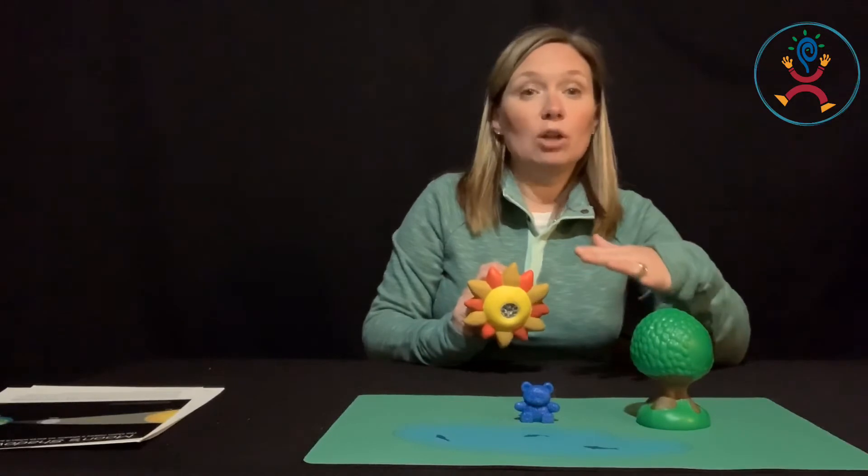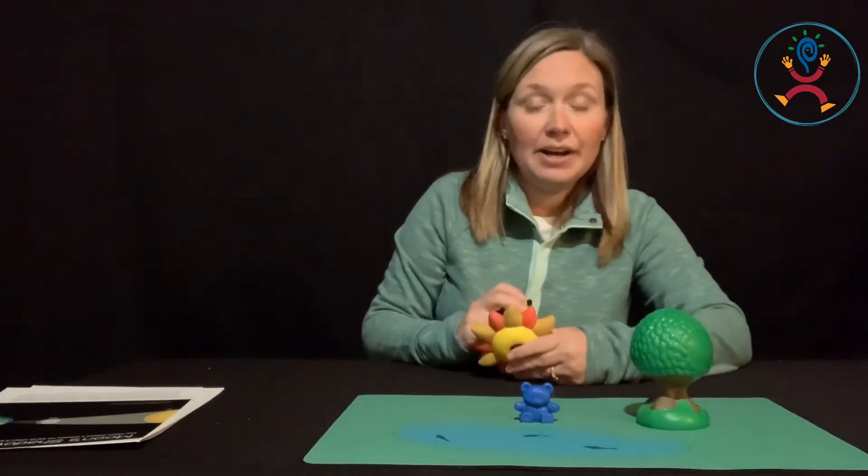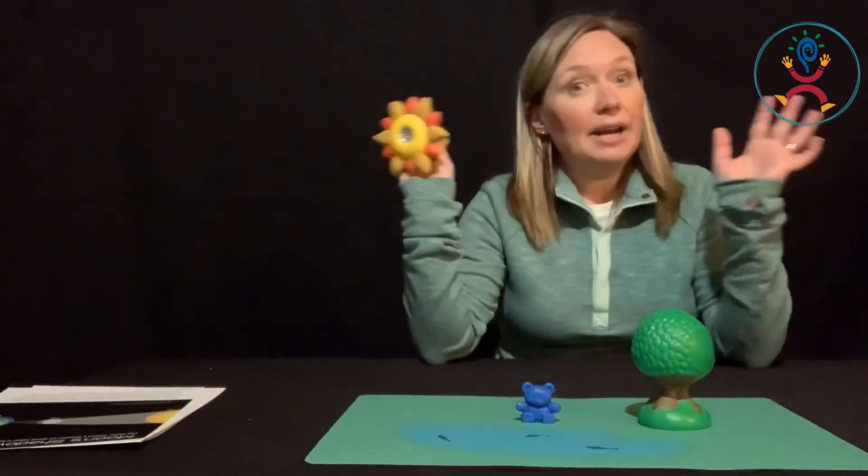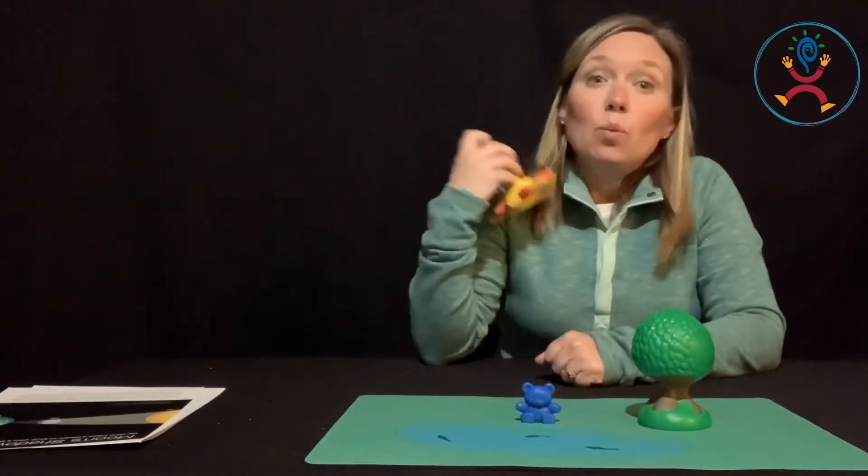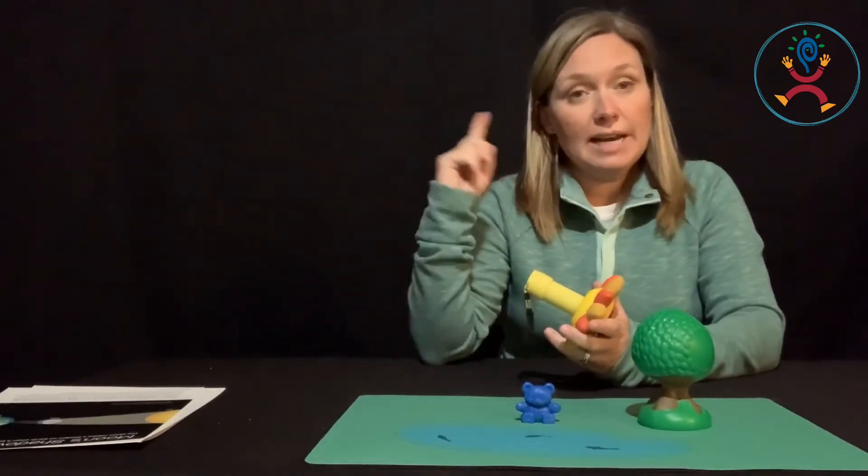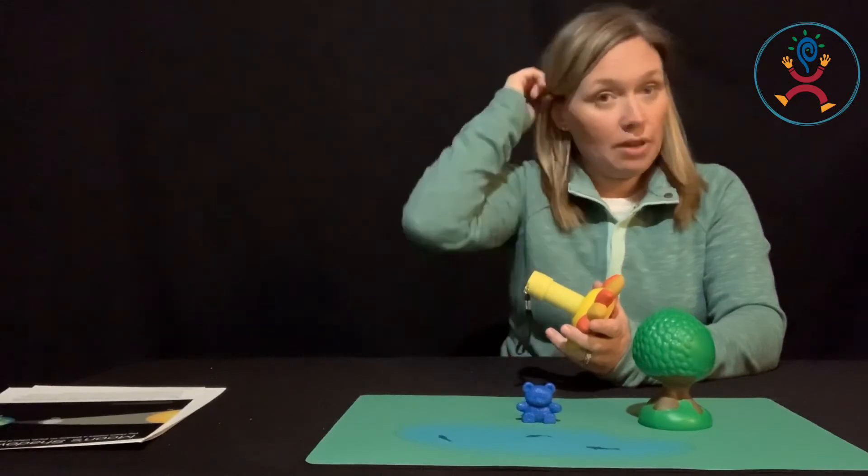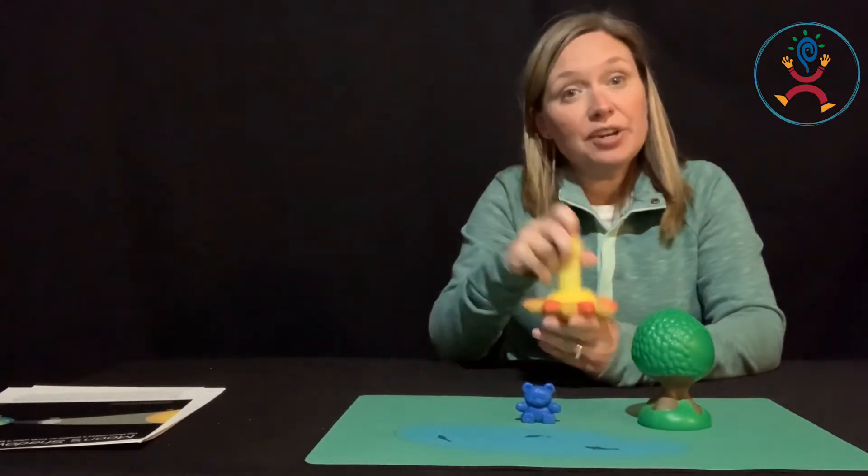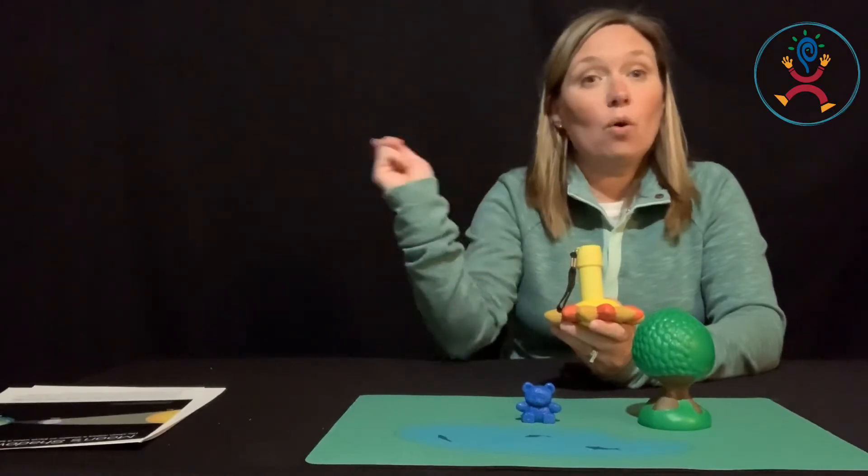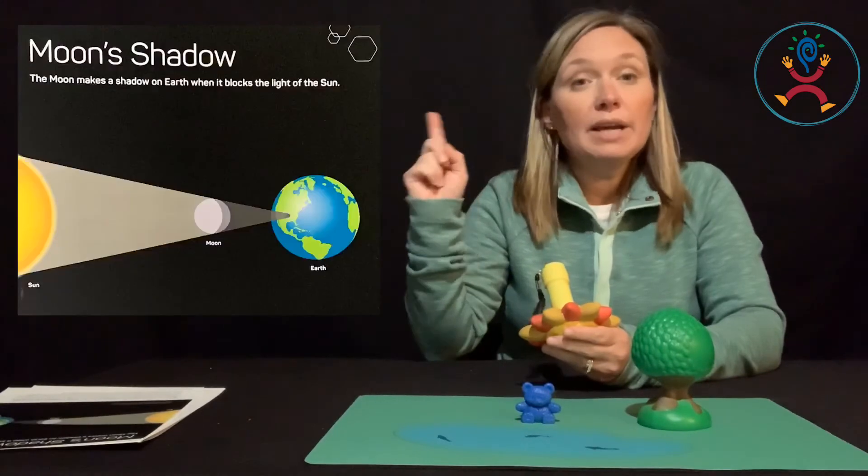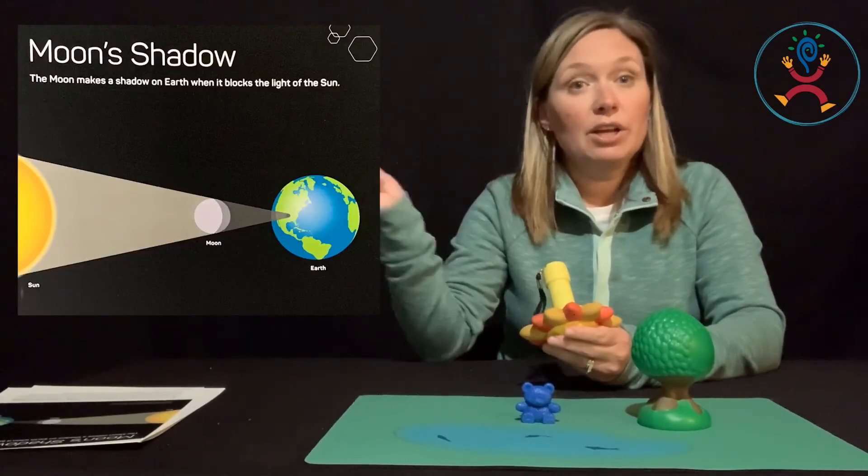So whenever you have something, your shadow will always be on the opposite side of the light source. Now the sun is always in outer space shining. We don't see it all the time because the earth is rotating and going around the sun. And it takes an entire year for the earth to orbit around the sun. At the same time, the moon is orbiting around the earth.